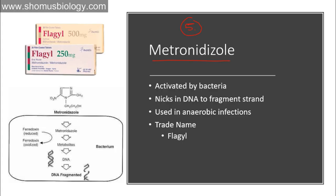The next type is metabolic pathway inhibitors. Metronidazole is activated by bacteria only and nicks the DNA to fragment strands. It is used mostly in anaerobic infections, with trade names Flagyl and Metrozeel commonly used for enteric infections. It oxidizes ferredoxin from its reduced form as part of its metabolic pathway mechanism. Additionally, metronidazole destroys the DNA by creating nicks at different locations, shattering the DNA — without necessarily cleaving both strands completely.